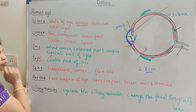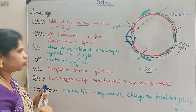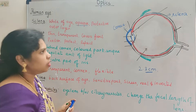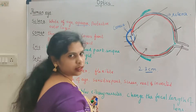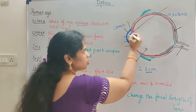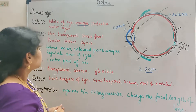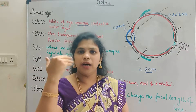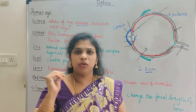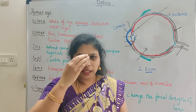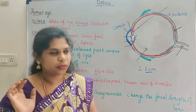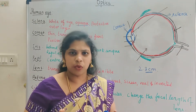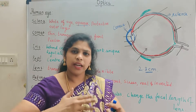Next one is iris. The iris is present behind the cornea. It is the colored part of the eye — in our eyes this is the colored part. And it is unique: it has different patterns, so each person's iris is different.